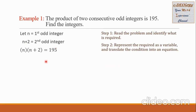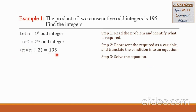The problem says the product of the two numbers, so we are going to multiply the first odd integer n times the second odd integer n plus 2, and this is equal to the product 195.